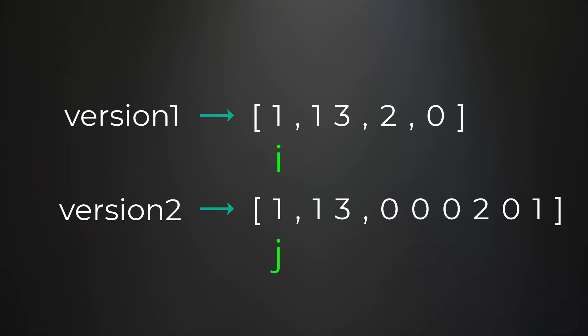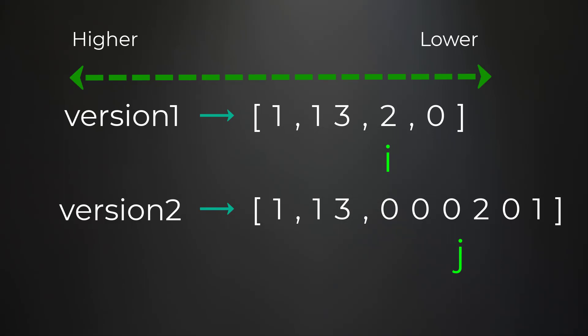Starting at index zero: converting the revisions to integers, 1 equals 1 — same, so we move both pointers forward. Next, 13 equals 13 — same, move forward again. Then we get to '2' and '000201.' Converting to integers gives us 2 and 201. In Java, converting a string to an integer strips leading zeros, which is useful to point out in an interview as it shows understanding of the standard library. Since 2 is not equal to 201, we know version one is less than version two and we return negative one. We don't need to check further because higher-order revisions are leftmost.